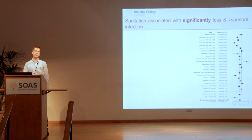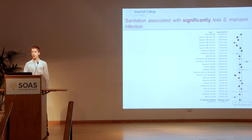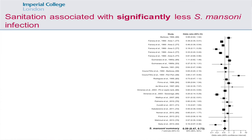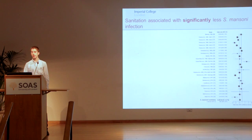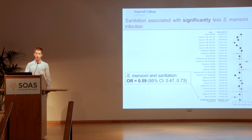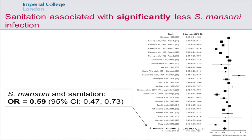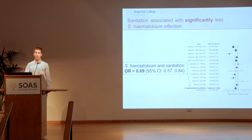Moving on to sanitation, we split the sanitation meta-analyses by species, because with S. mansoni the eggs are released in the feces, and with S. haematobium the eggs are released in the urine. It's possible that sanitation is more effective at preventing open defecation than open urination, so we might expect sanitation to be more effective in combating S. mansoni than S. haematobium. With S. mansoni, we found significantly lower odds of infection in those with adequate sanitation. We found the same for S. haematobium — the odds ratio was slightly higher, but not significantly different.